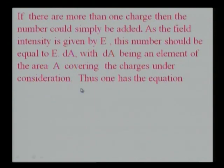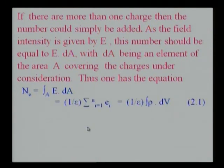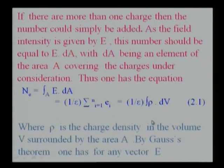Thus one has the equation integral over A of E dot dA, which can be expressed as 1 upon epsilon, because if there are more charges you simply add them, summation i equal to 1 to n of Ei, which is 1 upon epsilon integral rho dV. Here rho gives the charge density in the volume V surrounded by the area A.